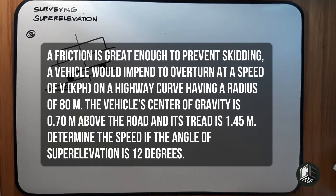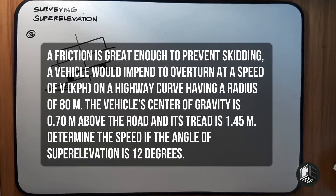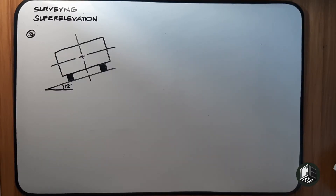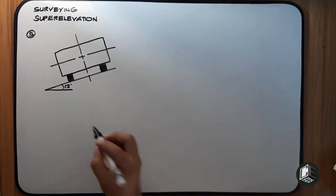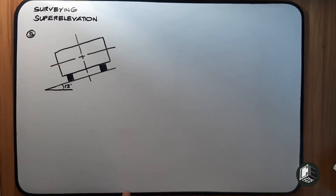This is our last example for super elevation. If friction is great enough to prevent skidding, a vehicle would tend to overturn at a speed v in kilometers per hour on a highway curve having a radius of 80 meters. The vehicle's center of gravity is 0.70 meters above the road and the tread is 1.45 meters. Determine the speed if the angle of super elevation is 12 degrees.